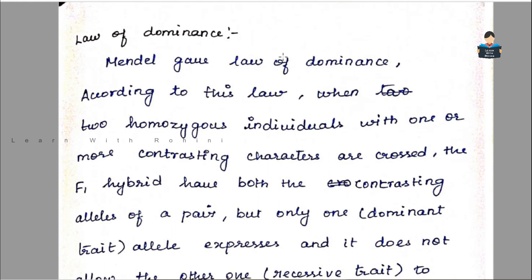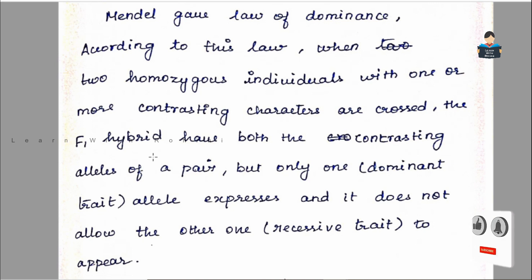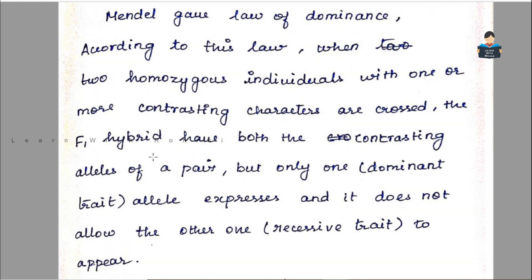The law of dominance states that when two homozygous individuals with contrasting characters are crossed, the resulting hybrid expresses only one allele — the dominant one — which does not allow the other (recessive) allele to appear. For example, in a plant with Capital T and small t, the tall phenotype is expressed because Capital T is the dominant trait.